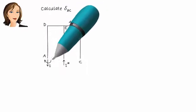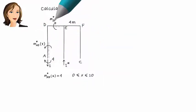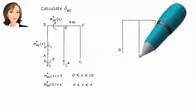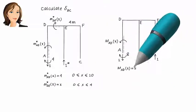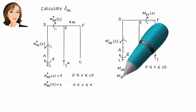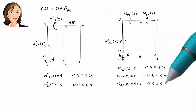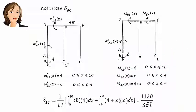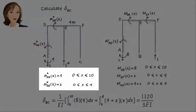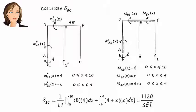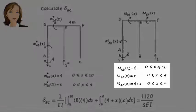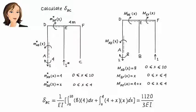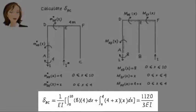Finally, we calculate delta BC — the vertical displacement at B due to a vertical unit load at C. What we referred to as M when calculating delta CB becomes M star here, and the M star used for delta CB becomes M here. Not surprisingly, delta BC equals delta CB.